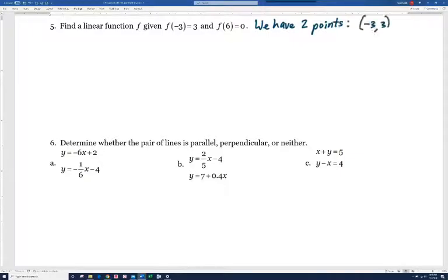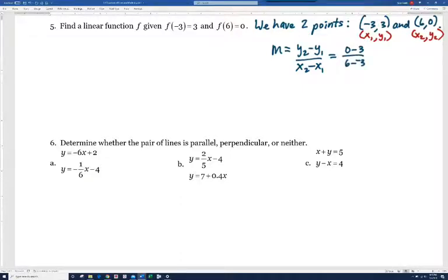So we have two points here: (-3, 3) and (6, 0). Now it's just like the last problem that we did. How do I write the equation of a line given two points? Well, I'm going to first find the slope because if I'm going to use point-slope form, I need the slope. Using the slope formula, we get (0 - 3) / (6 - (-3)), which is -3/9, or -1/3.